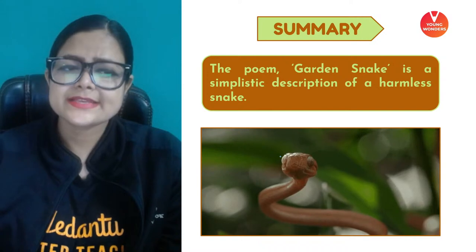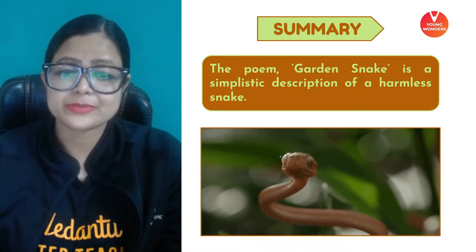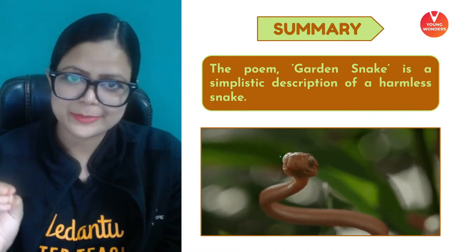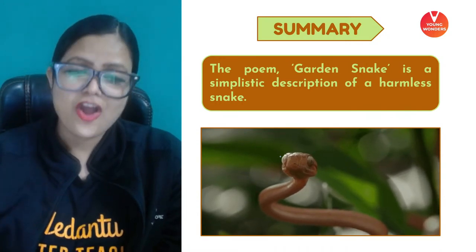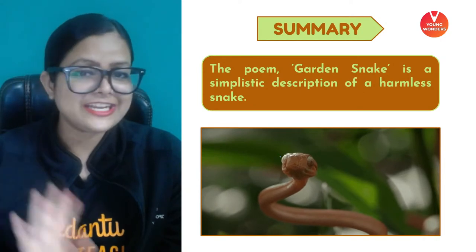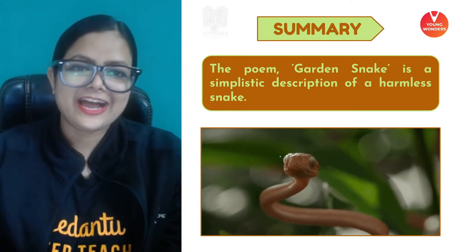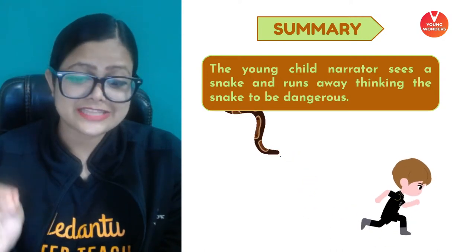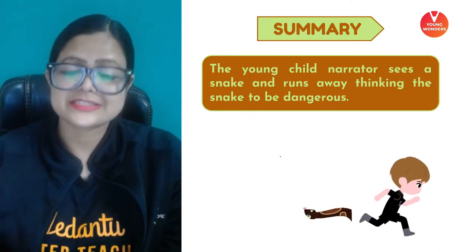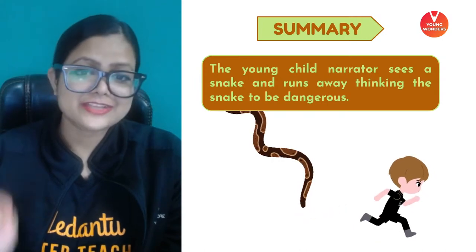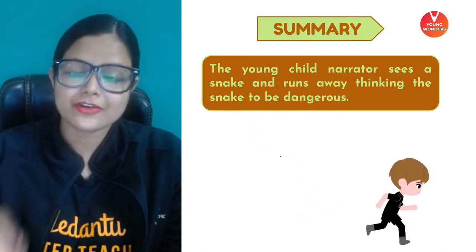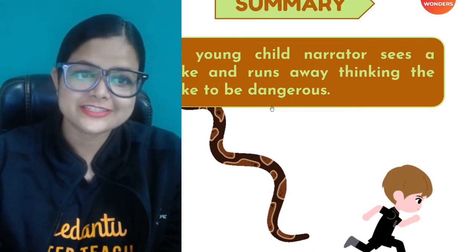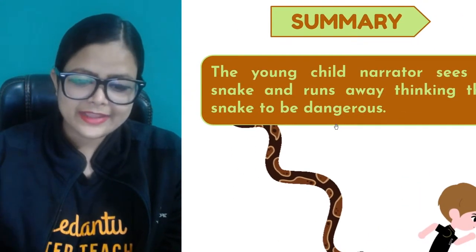The poem 'Garden Snake' is a simplistic description of a harmless snake. We see a small child who is the narrator, and he gets scared when he first sees the snake. The young child narrator sees the snake and runs away, thinking the snake to be dangerous. He sees a snake in the garden and as a result gets very scared.